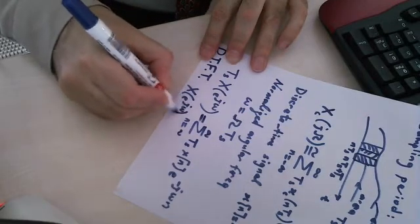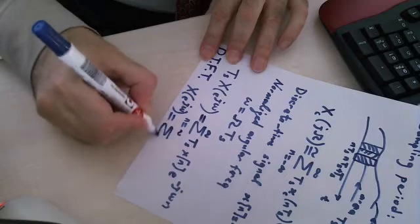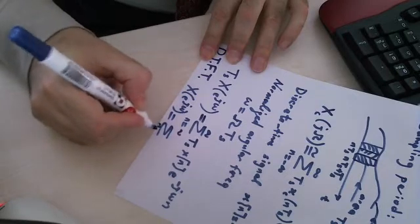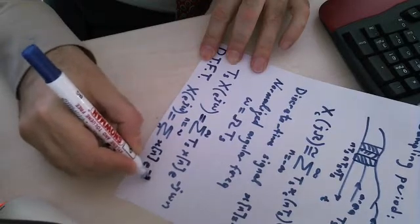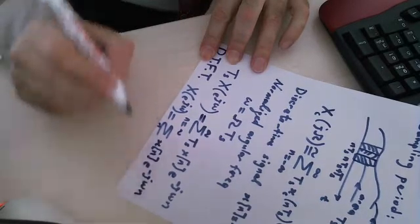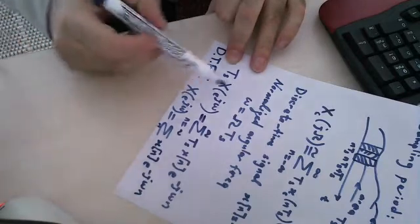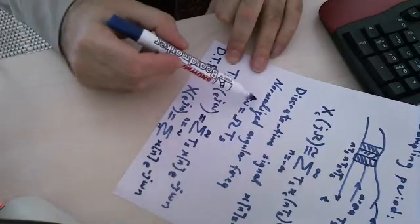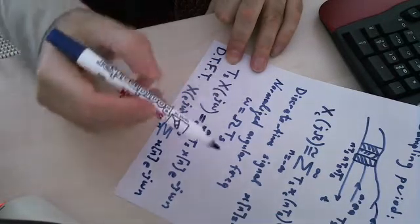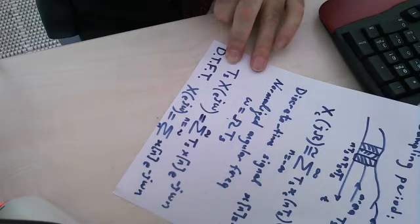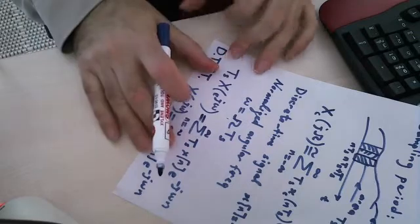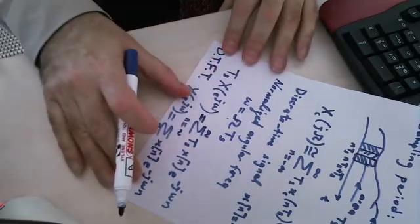Therefore, we call the DTFT discrete time Fourier transform, x of e to the j omega is summation over n, it goes from minus infinity to plus infinity, xn e to the minus j omega n. So we have the relation between normalized angular frequency omega and capital omega expressed here. And this is the DTFT.